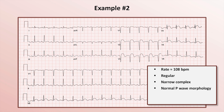What is the relationship between P-waves and QRS complexes? There is a one-to-one relationship with each P preceding each QRS, along with a constant PR interval that is less than 200 ms. Our diagnosis here is sinus tachycardia.